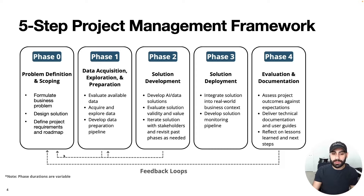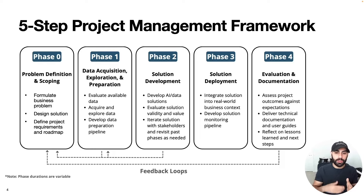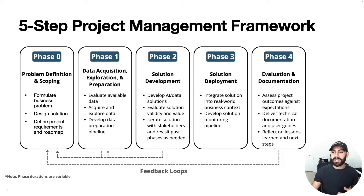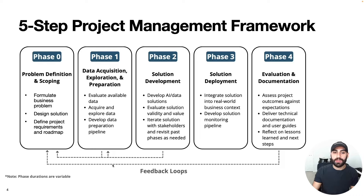Another feedback loop is from phase two back to phase zero. The data may be properly preprocessed, but the predictive performance still may not be as good as the existing solution — requiring you to go back to phase zero and reassess the solution design, asking if there's a better way to solve the problem. The final feedback loop is if everything goes according to plan and value is generated. No project is ever complete, there are always opportunities for improvement, and you'd return to phase zero to start building a broader solution.